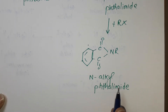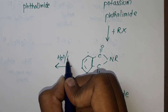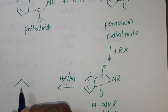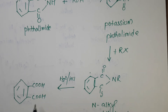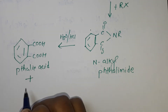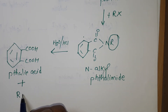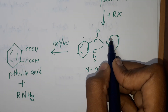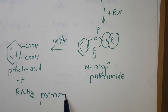Then the N-alkyl phthalimide reacts upon hydrolysis with hydrochloric acid. It will give phthalic acid (COOH groups) and yield a primary amine R-NH2. The R group comes from the alkyl halide, and this R-NH2 is the primary amine.